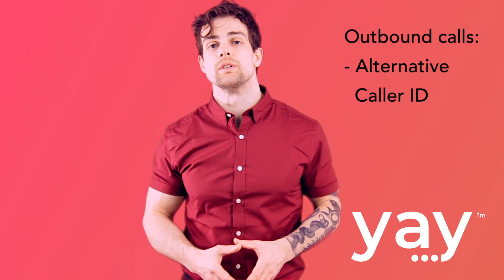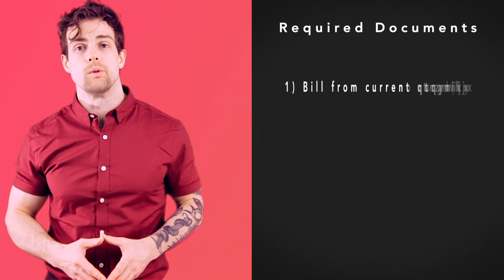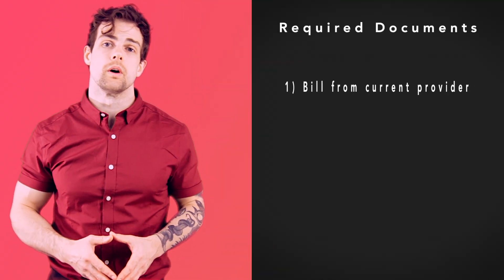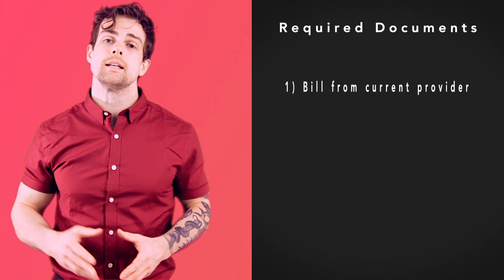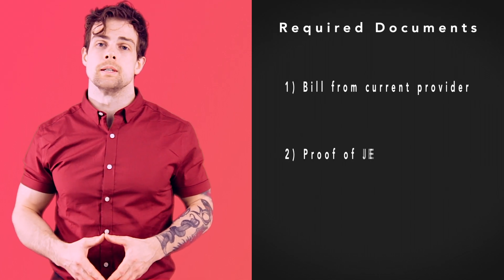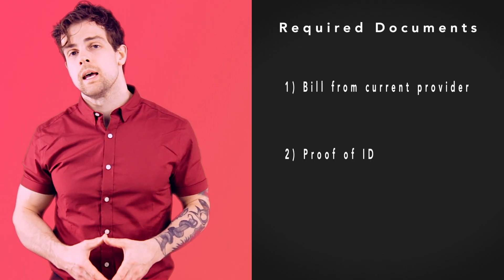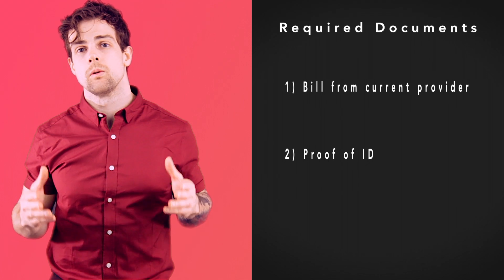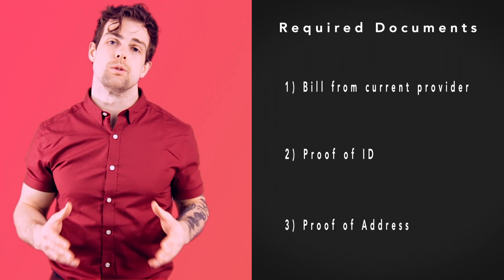From here, you'll need to upload three documents. Firstly, a recent bill from your provider — it must show your name and the phone number you want to use as caller ID. Secondly, proof of ID, like a driver's license or passport. And finally, one more proof of address, like a utility bill.